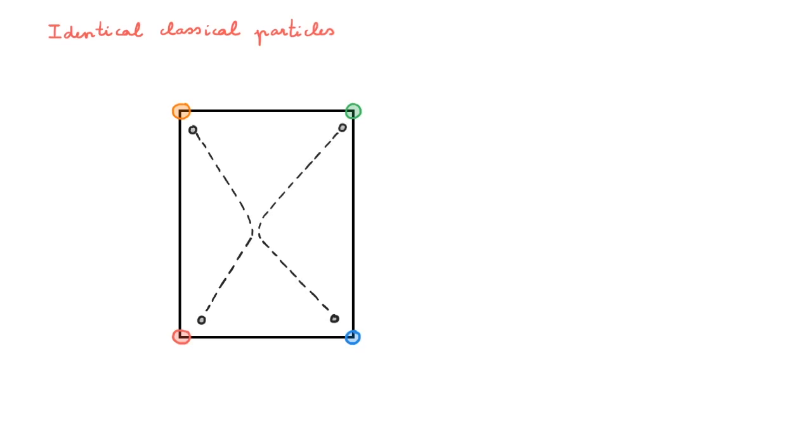If we look at this situation, it is clear that although these two particles are identical, in the sense that they have the same mass, charge and so on, we can nonetheless distinguish them. If I call the particle that started near the red corner particle 1 and the particle that started near the blue corner particle 2, then I can say that in our experiment particle 1 went from the red corner to the orange corner and particle 2 went from the blue corner to the green corner.